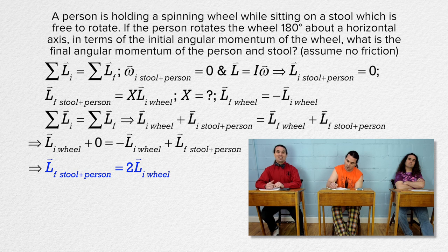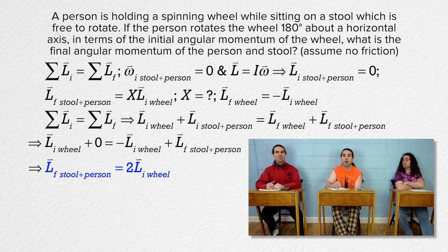The final angular momentum of the stool and person equals two times the initial angular momentum of the wheel.